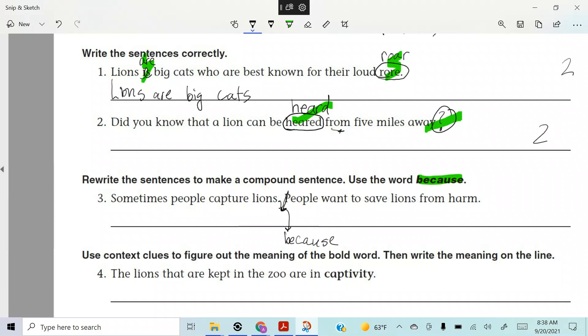So we're going to use a comma, right? Rewrite the sentence to make a compound sentence. We need to use the word because. But because is a conjunction, right? What do we always add before a conjunction? A comma. A comma, right?